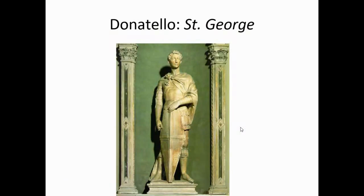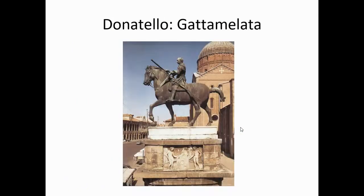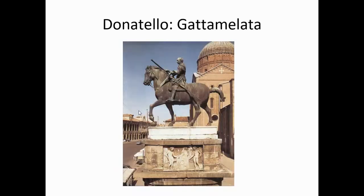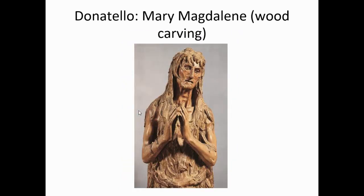There is Donatello's sculpture of St. George — the killer of the dragon, the patron saint of England. That's why on the flag of England you have the cross of St. George on his shield, and St. Andrew was crucified on a cross like an X. Those two crosses make up the Union Jack, since Scotland is part of the United Kingdom. There is also his equestrian statue Gattamelata, and his carving in wood of Mary Magdalene, which you can also find in the Bargello.